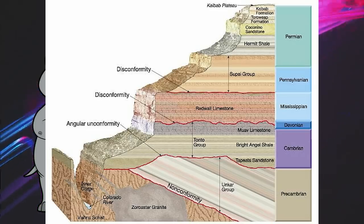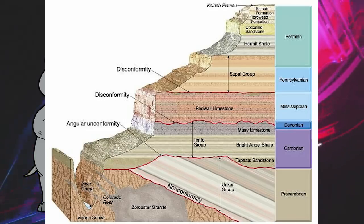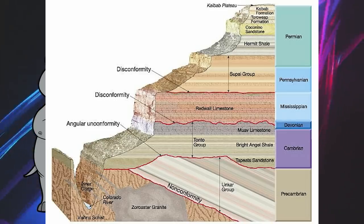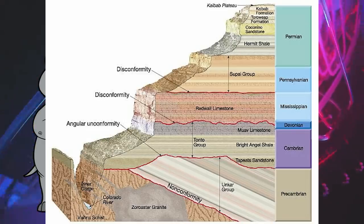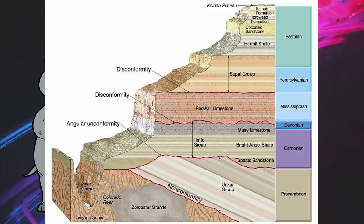Next up is the Tonto group, which is separated by an angular unconformity with the Unkar group and a nonconformity with the granite and schist. This is sometimes referred to as the Great Unconformity, which is an unconformity that spans most of North America. The amount of time missing varies depending on the local conditions, but in the Grand Canyon, where it meets the Unkar group, it's about 175 million years.